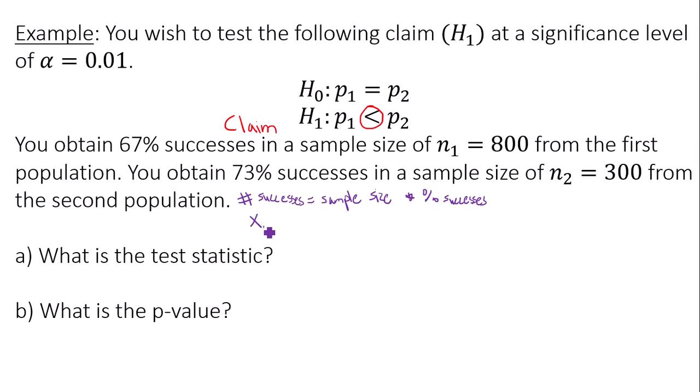So in this case, x1 is 800 times 0.67. That's 67% as a decimal. That gives me 536. My sample size for group 1 is 800. The number of successes for group 2 would be 300 times 0.73. That's 219. The sample size for group 2 would be 300.